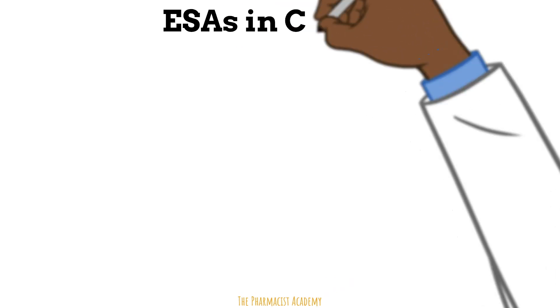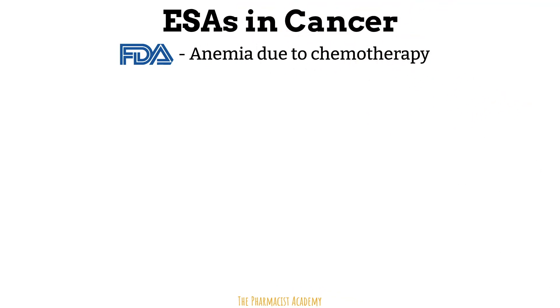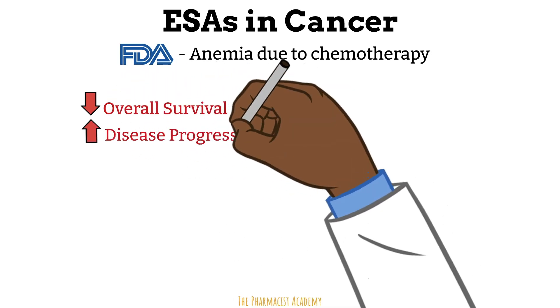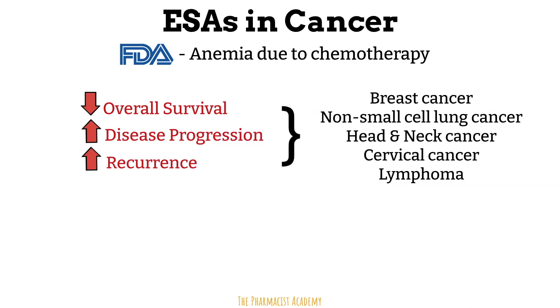Another major caution is using ESAs in certain cancers. Although ESAs have an FDA indication for anemia due to chemotherapy, some researchers have found a decrease in overall survival rate, increase in disease progression, and recurrence when ESAs were used in patients with certain types of cancers. This was surprising because we initially thought erythropoietin simply went to the bone marrow to stimulate red blood cell production — but with further investigation, researchers found that erythropoietin had pleiotropic effects.